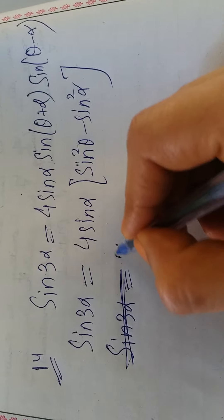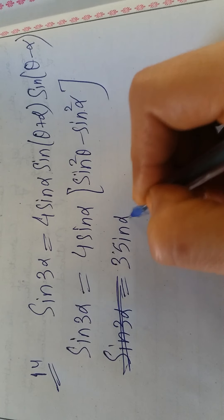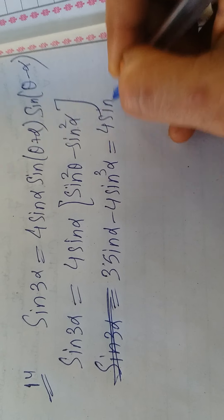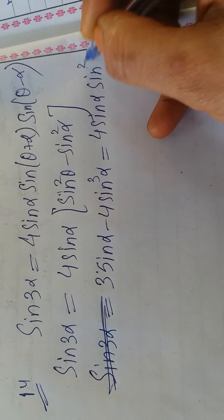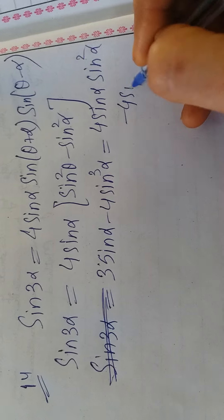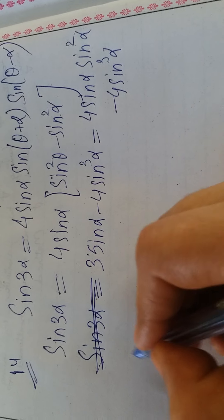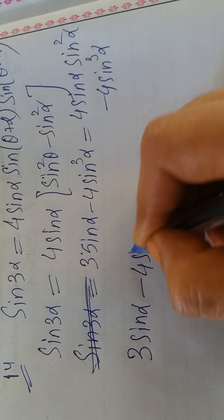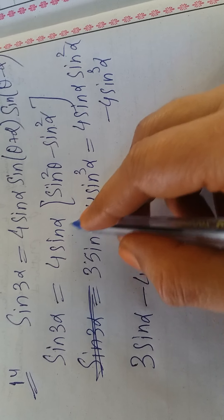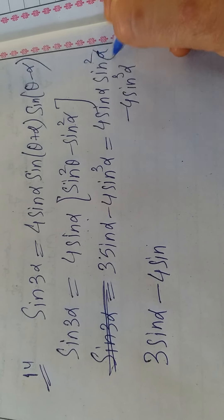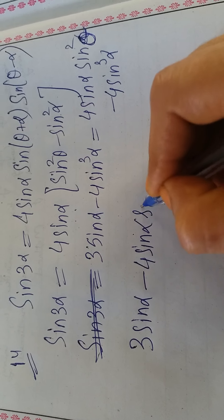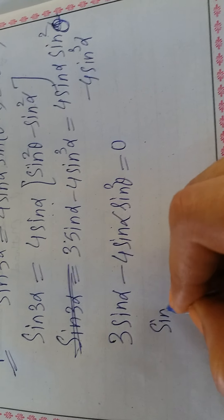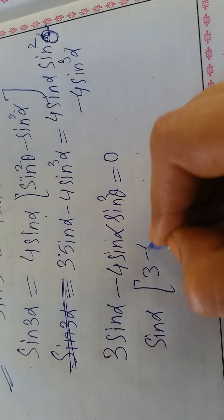Now apply the formula for sin3α: 3sinα - 4sin³α equals 4sinα·sin²θ - 4sin³α. The sin³α terms cancel. The remaining terms give: 3sinα = 4sinα·sin²θ, so taking sinα common: sinα(3 - 4sin²θ) = 0.